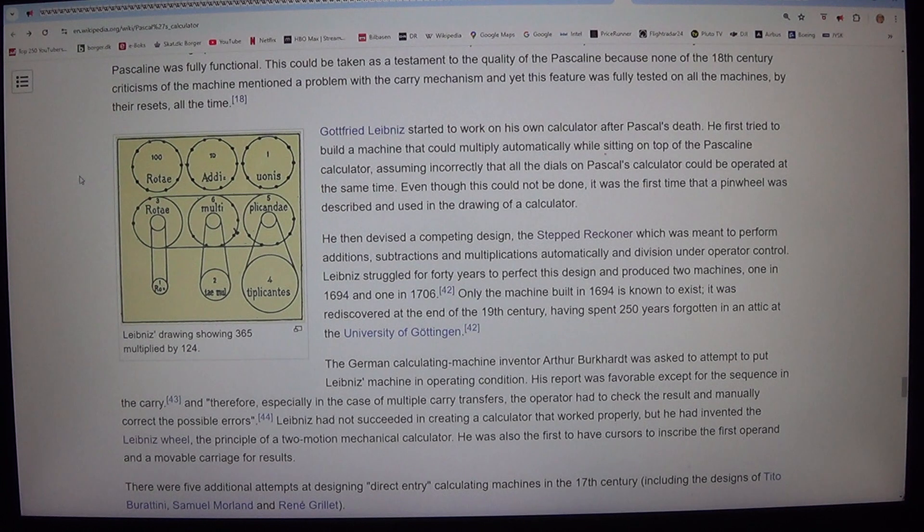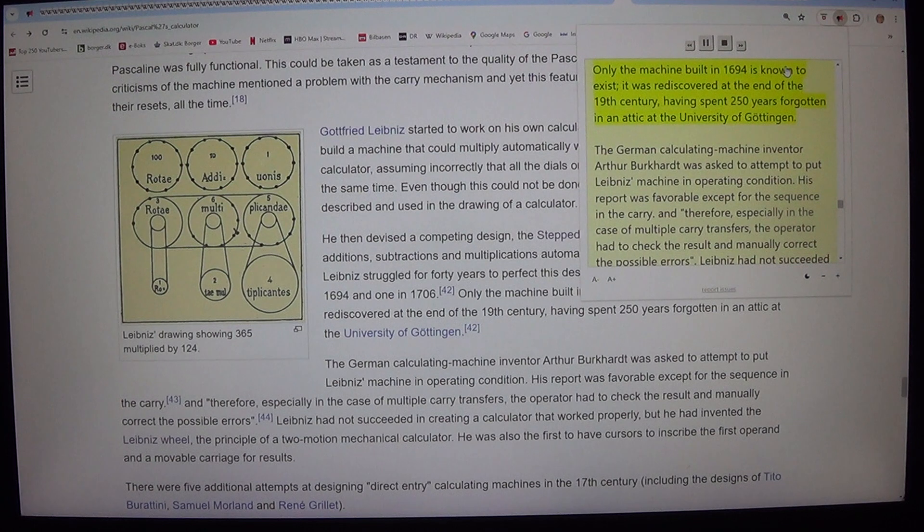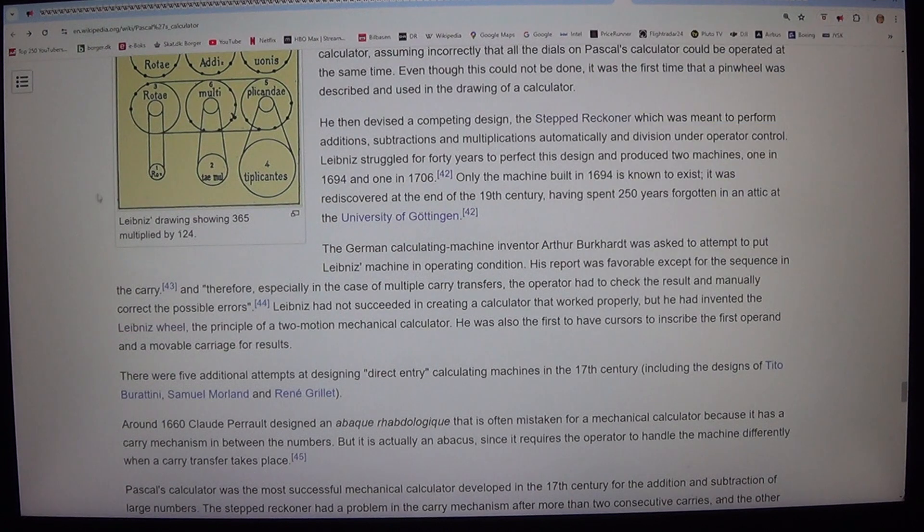He then devised a competing design, the stepped reckoner which was meant to perform additions, subtractions and multiplications automatically and division under operator control. Leibniz struggled for 40 years to perfect this design and produced two machines, one in 1694 and one in 1706. Only the machine built in 1694 is known to exist. It was rediscovered at the end of the 19th century, having spent 250 years forgotten in an attic at the University of Gottingen.